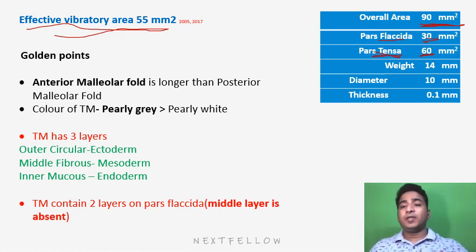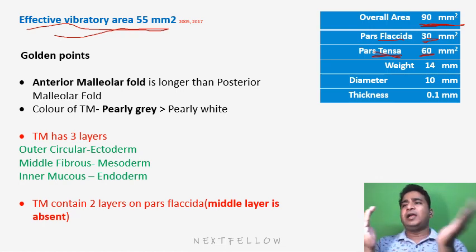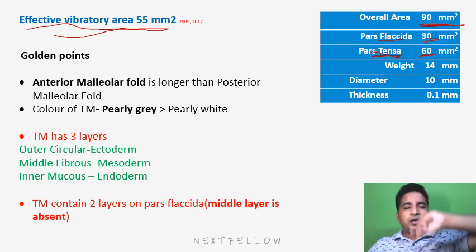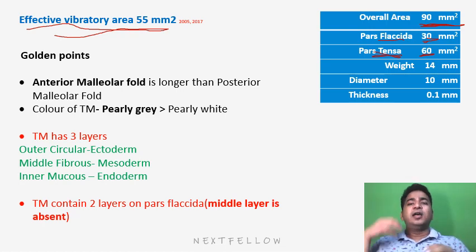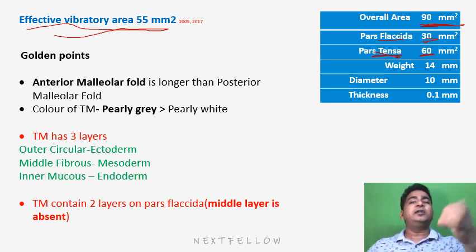What is specific about pars flaccida? Pars flaccida rests in the scutum and consists of only two layers — the outer epithelial and inner endothelial — there is no middle fibrous layer. This is why it is the most common site for cholesteatoma formation. Any negative suction or negative pressure in the middle ear will lead to retraction of pars flaccida, causing an attic retraction.